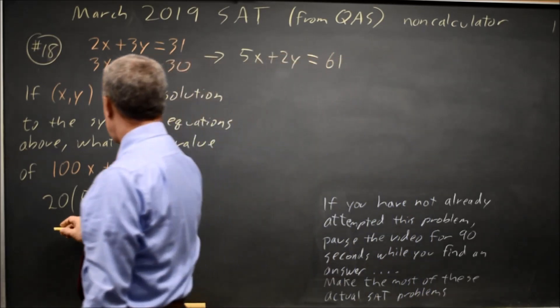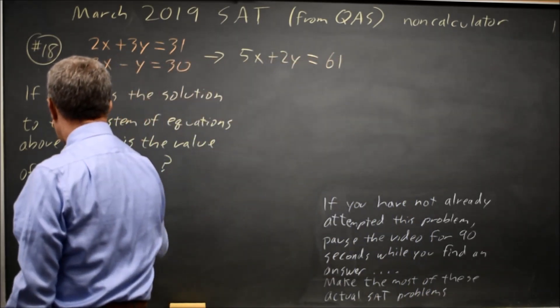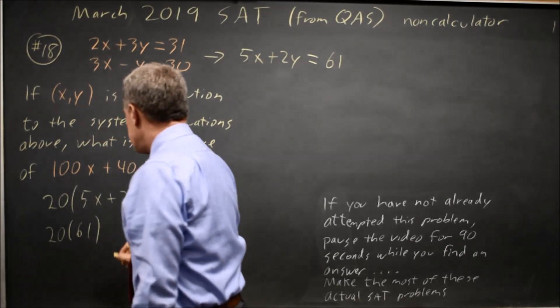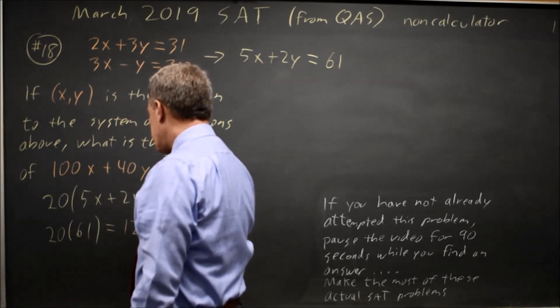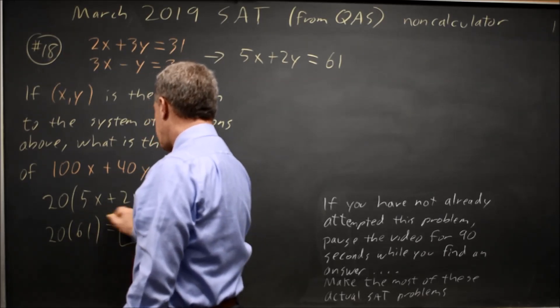So 20 times 5X plus 2Y is 20 times 61. 20 times 60 is 1200. 20 times 1 is 20, so that's 1220 would be the number I grid in.